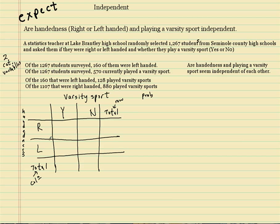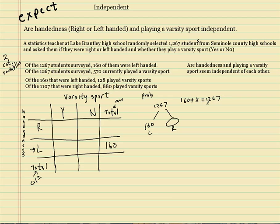Now let's get into the data. Out of the 1,267 student surveys, 160 were left-handed. These are the left-handed students that played and those that didn't, but the total of 160 goes in the row total. So if there's 1,267 students and you have 160 left-handers, then the rest have to be right-handers. It's just algebra — 160 plus what number equals 1,267. So you subtract the 160, and that comes out to 1,107.